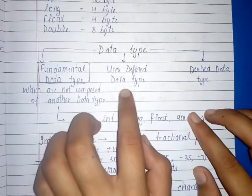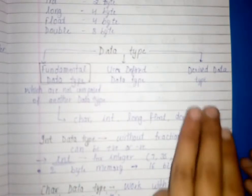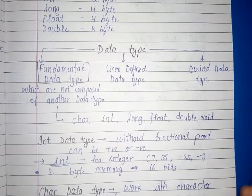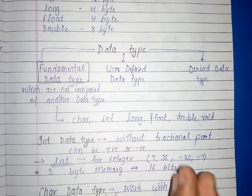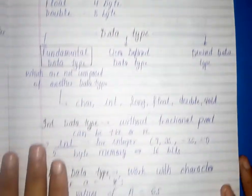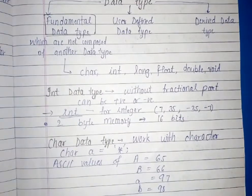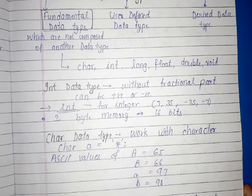User defined data types, which the user has defined itself, they are user defined data types. Then the third type is derived data types, which is composed of fundamental data types. In this video, we will study fundamental data types, and in the next video, we will see user defined data types.